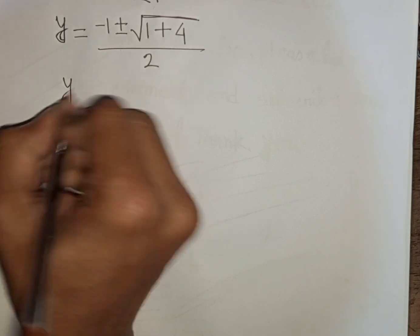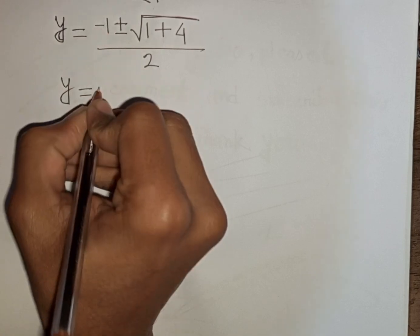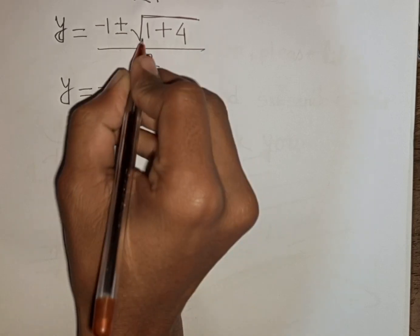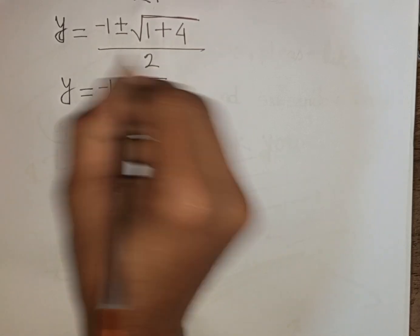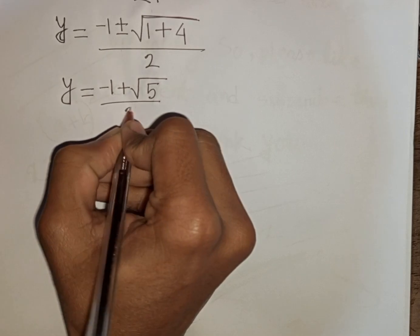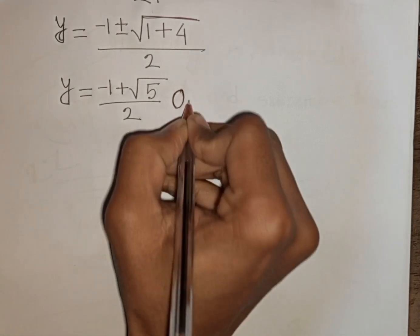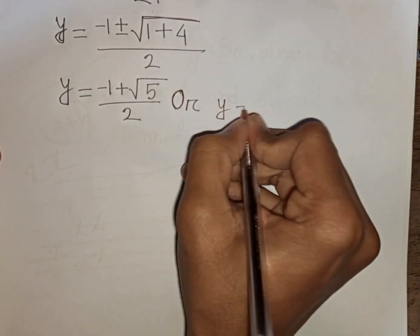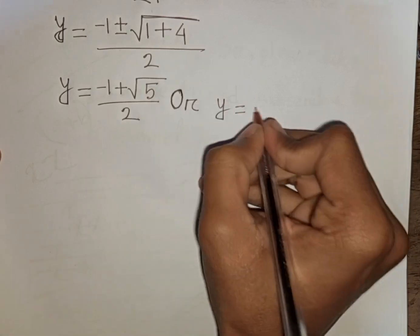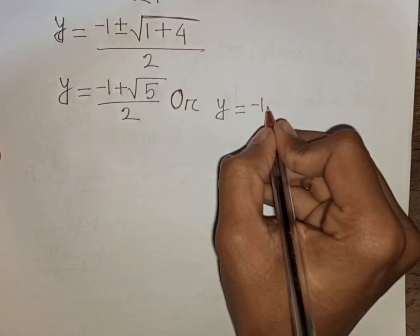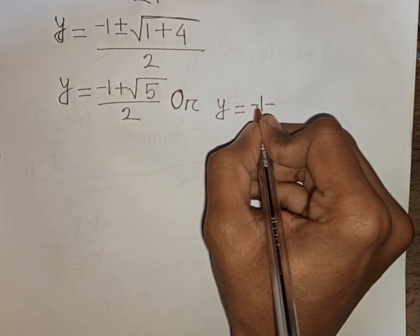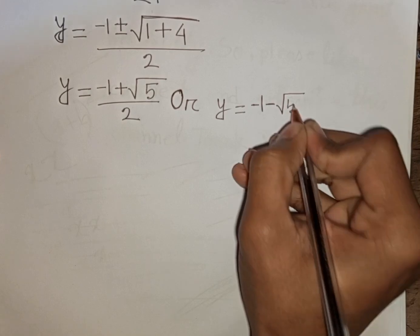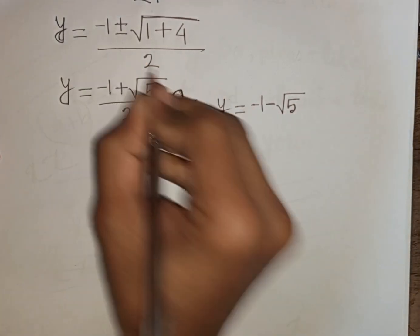There are two cases. y equals negative 1 plus square root of 1 plus 4 — that means square root of 5 — then divided by 2. Or y equals negative 1 minus square root of 1 plus 4 — that means square root of 5 — divided by 2.